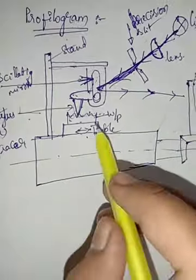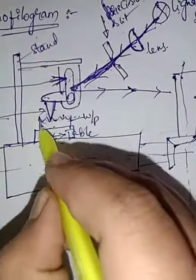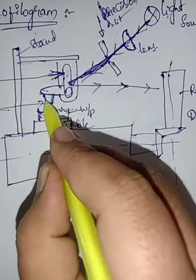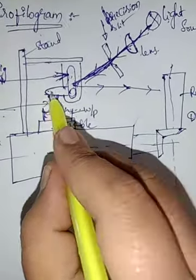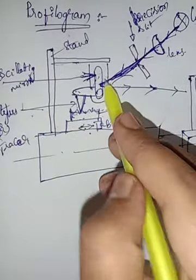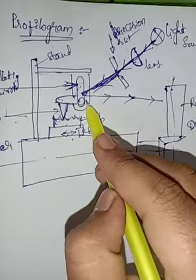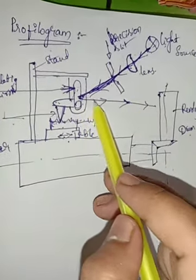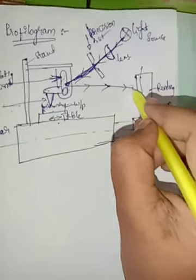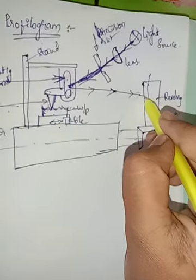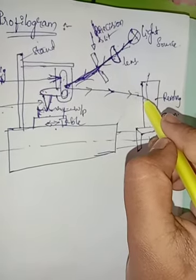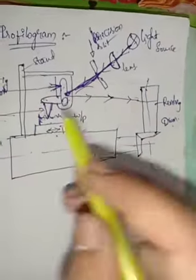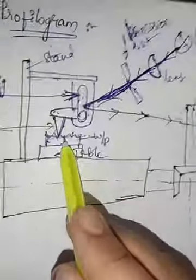If the workpiece is flat, the stylus remains flat along the surface. The stylus connects to the oscillating mirror. With a flat surface, the light beam is reflected steadily from the mirror, and the film shows a straight line.